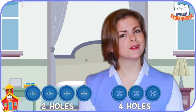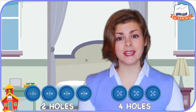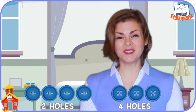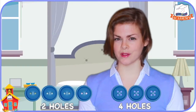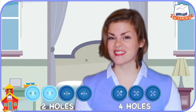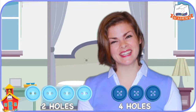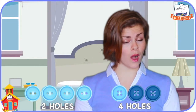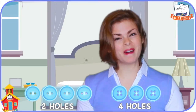Okay! So let's see. How many buttons are in each category now that we just sorted them all? Well, let's count them to find out. The category with two holes has one, two, three, four buttons, doesn't it? And the category with four holes has one, two, three buttons.